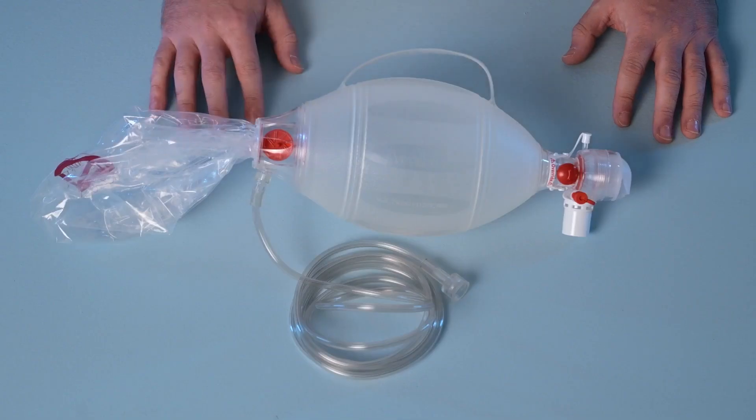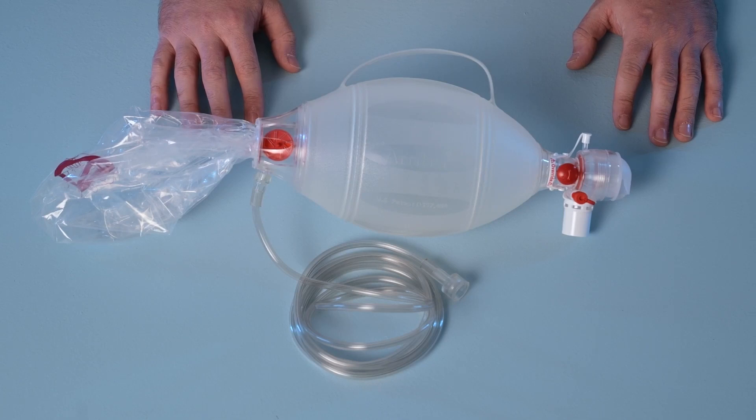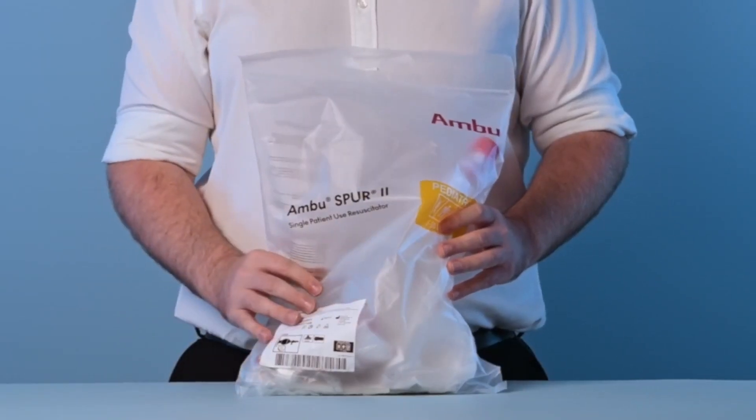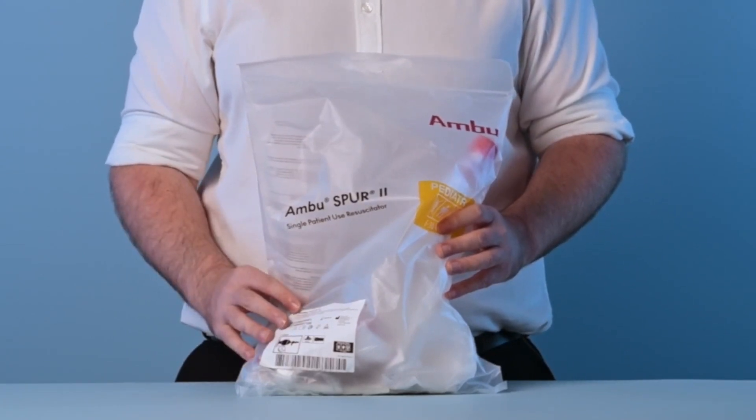The infant size Spur2 is also available with a reservoir tube instead of a reservoir bag. All Spur2 devices are MR conditional, they're supplied non-sterile, and each comes packaged in a colour-coded plastic pouch that features a handle for transportation.